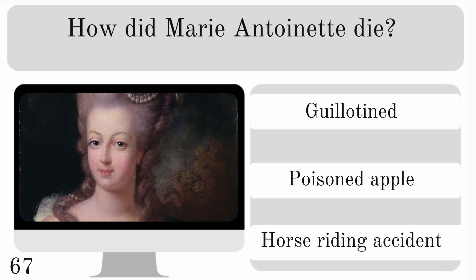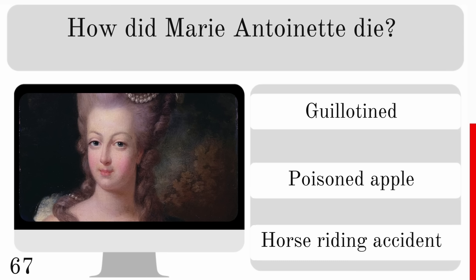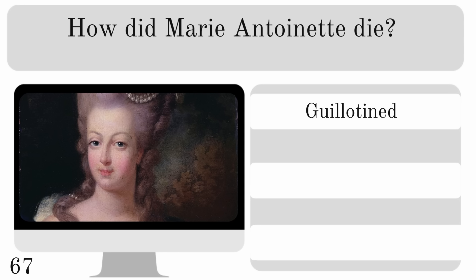How did Marie Antoinette die? Guillotined, poisoned apple or horse riding accident? And the answer — she was guillotined.